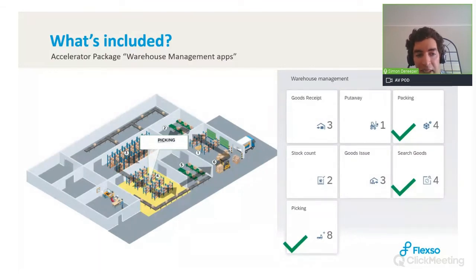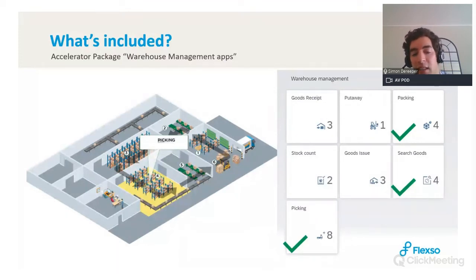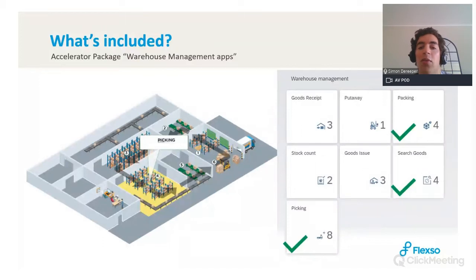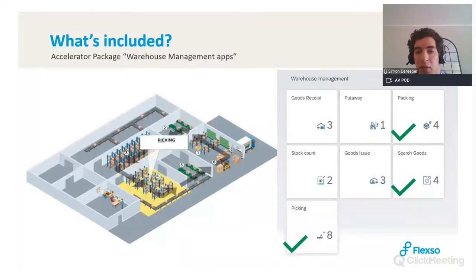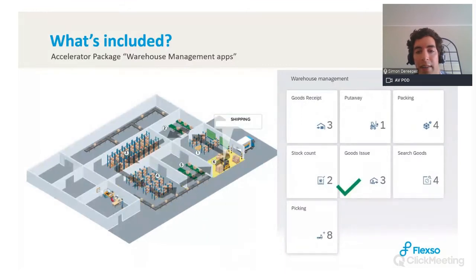For the picking flow, you use the picking application: scan the delivery number from a picking letter or delivery note, and the system tells you which materials to pick and from which location, which you then confirm. The packing application is also useful when you need to repack goods for shipment to a customer. For the shipping flow, when goods are loaded on the truck, you use the goods issue application to post the goods issue on that delivery.